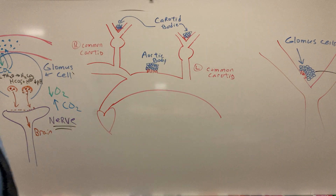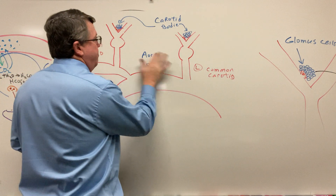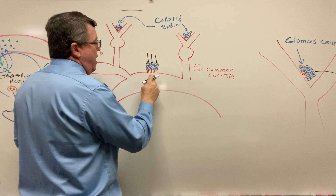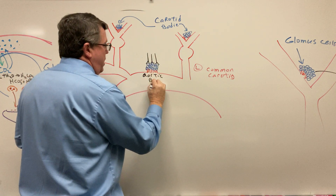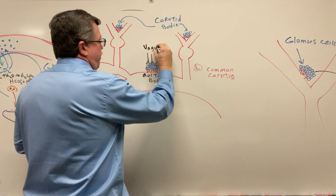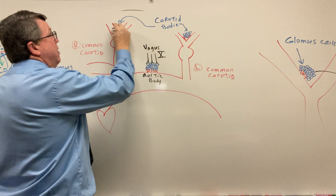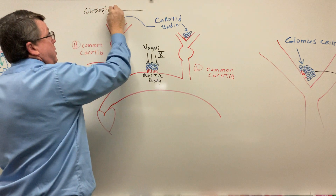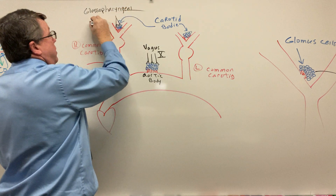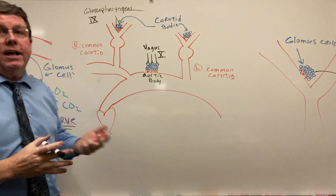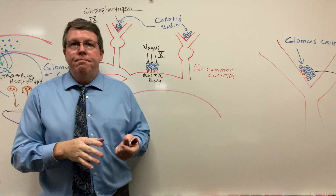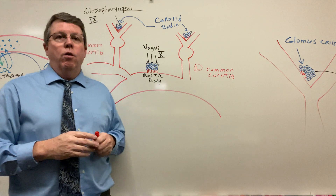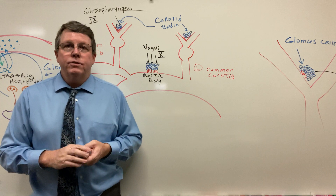If you go back and take a look, we have nerves coming off of here. The nerves coming off the aortic body are going to be the vagus nerve, also known as cranial nerve 10. The nerves coming off the carotid bodies are going to be the glossopharyngeal nerve, which is cranial nerve 9. These are going to go back up to the brain stem and stimulate the respiratory centers, and then you change your respiration rate. That's it for our chemoreceptors. If you like this video please hit the like button and subscribe — thank you so much for watching.